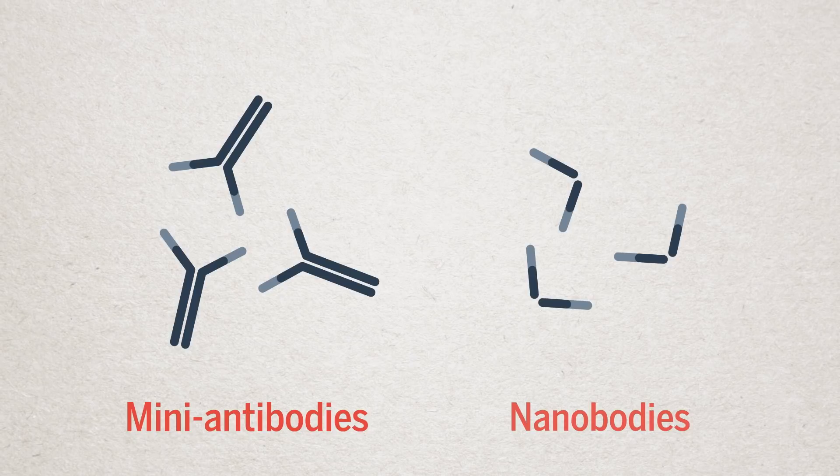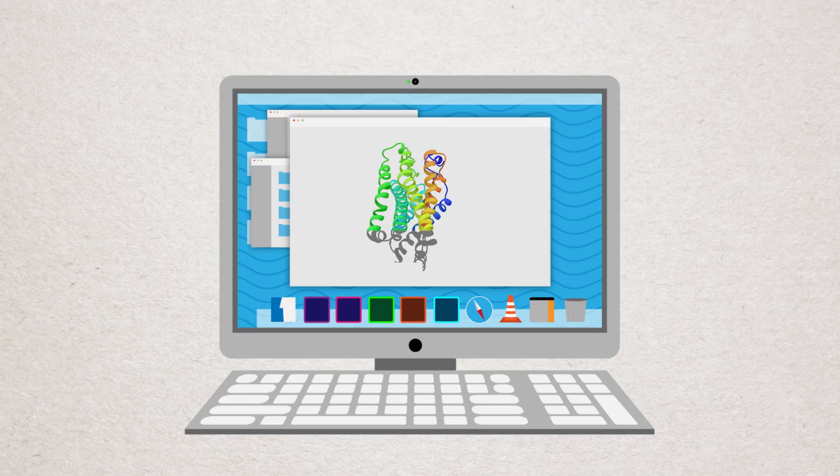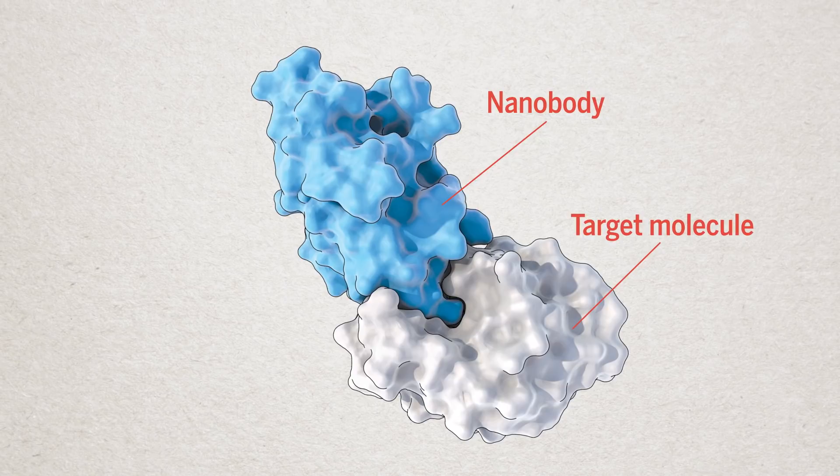Nanobodies gained early fame for their role in helping to visualize the structure of complex proteins. Their small size lets them bind tightly and deeply, and this can help stabilize ornate molecules whose flexibility thwarts the imaging process.